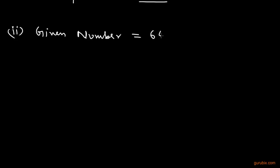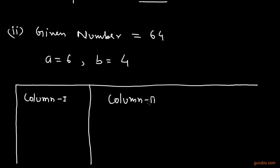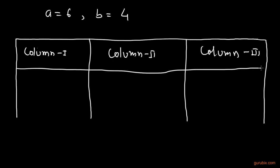Now we move to part 2, where the given number is 64. The tens digit A equals 6 and the unit digit B equals 4. We prepare a similar table with column 1, column 2, and column 3, where we will calculate A², 2AB, and B² respectively.